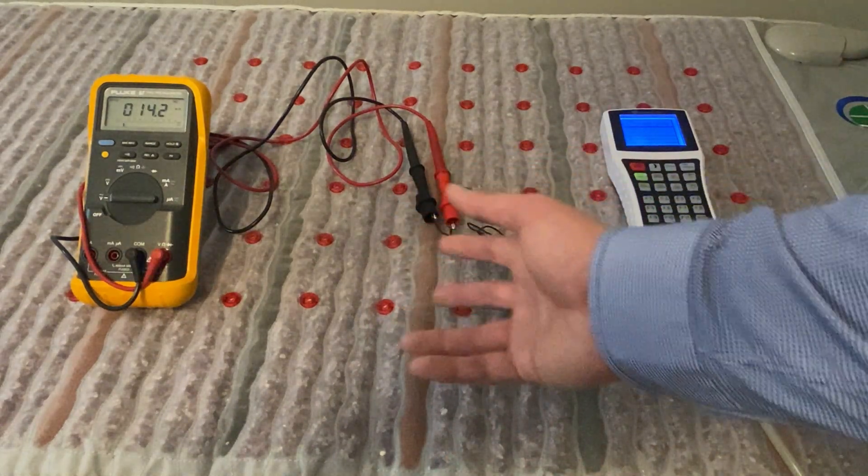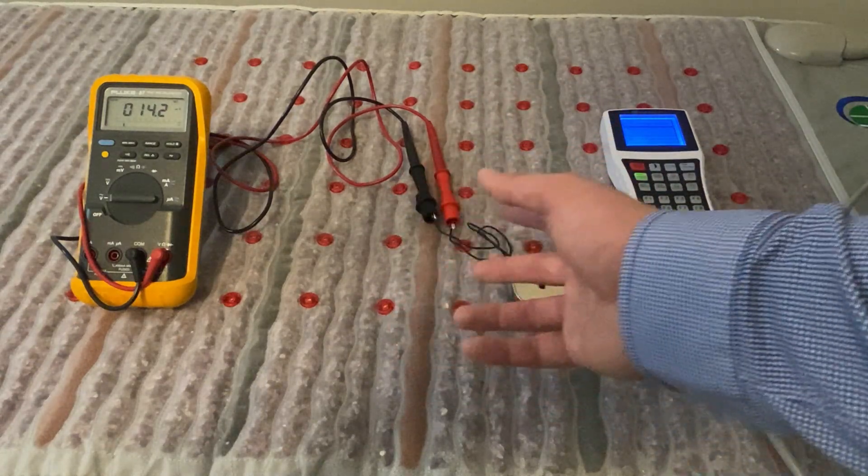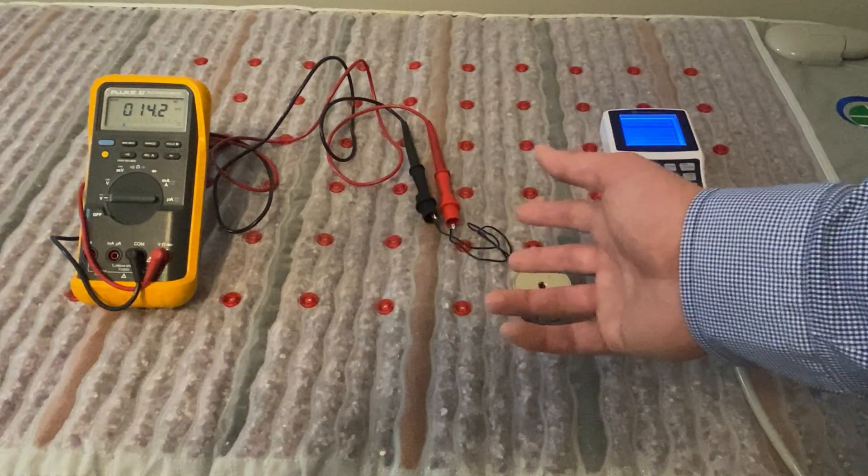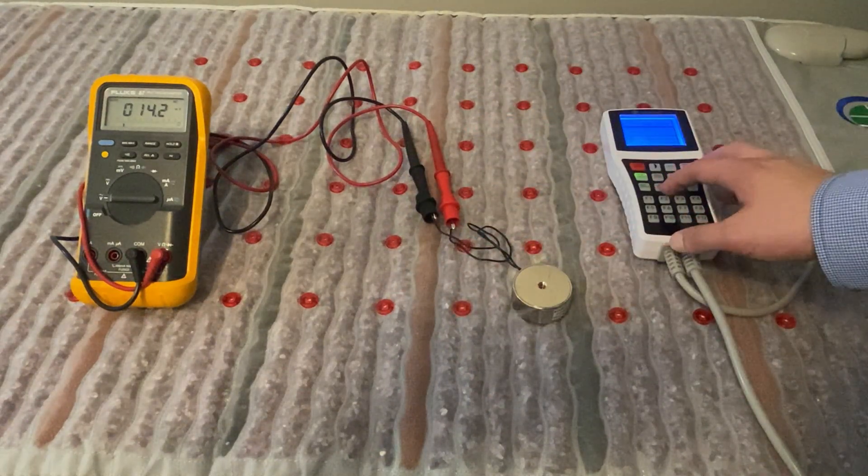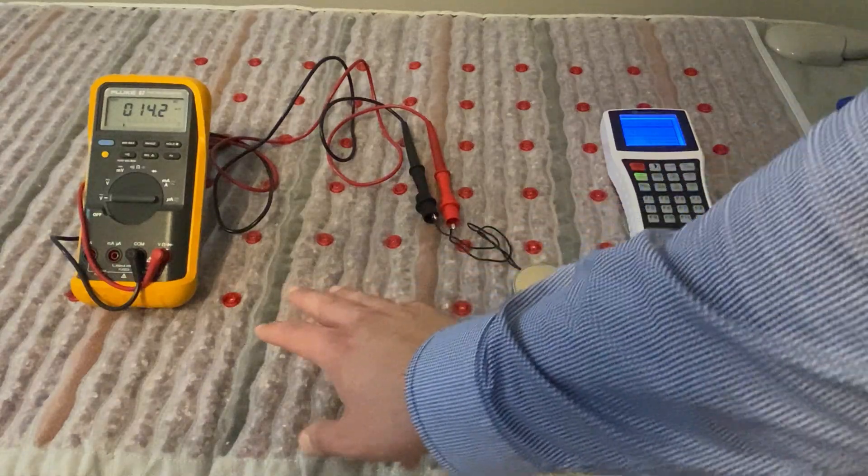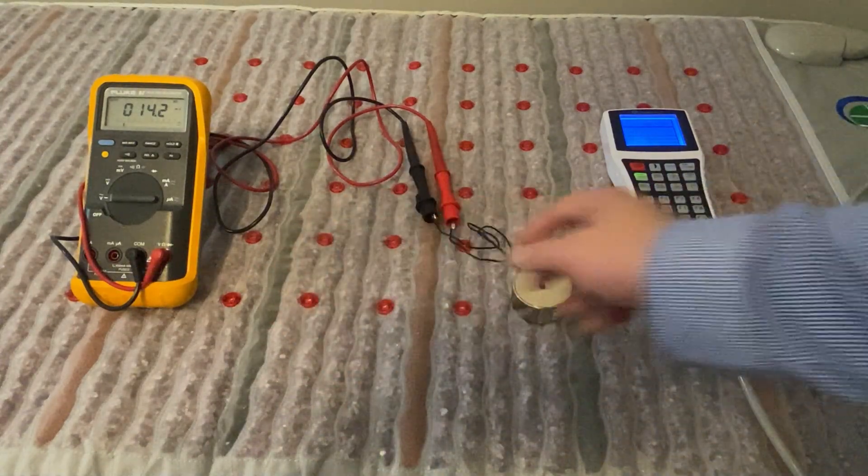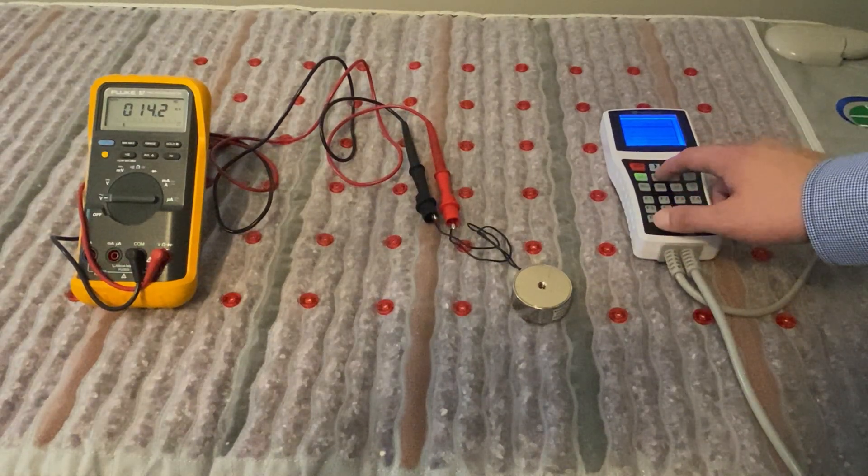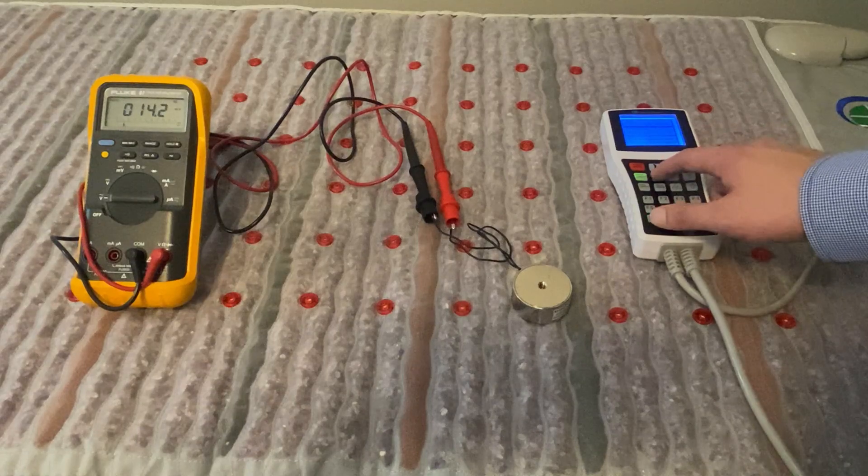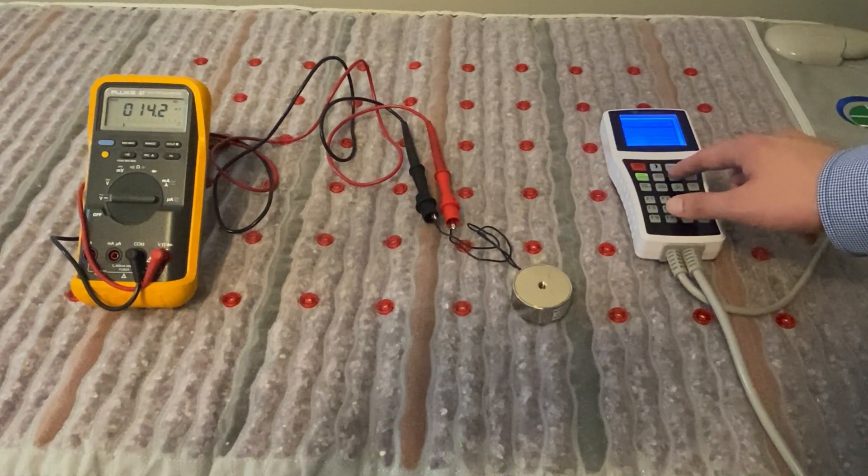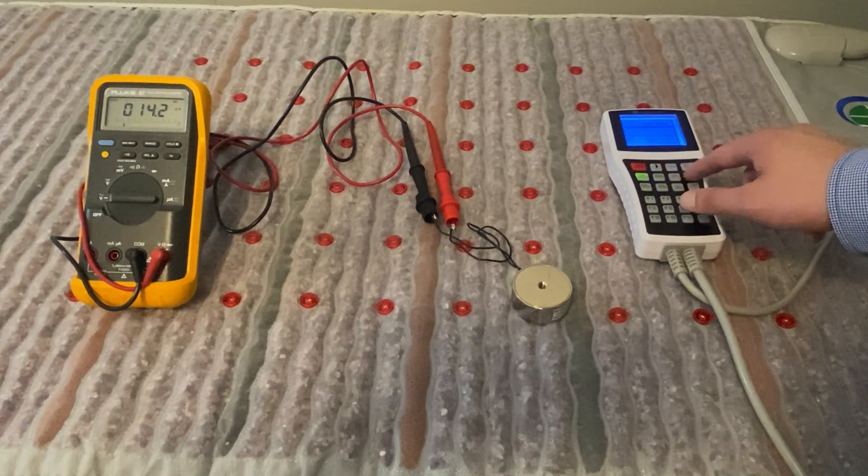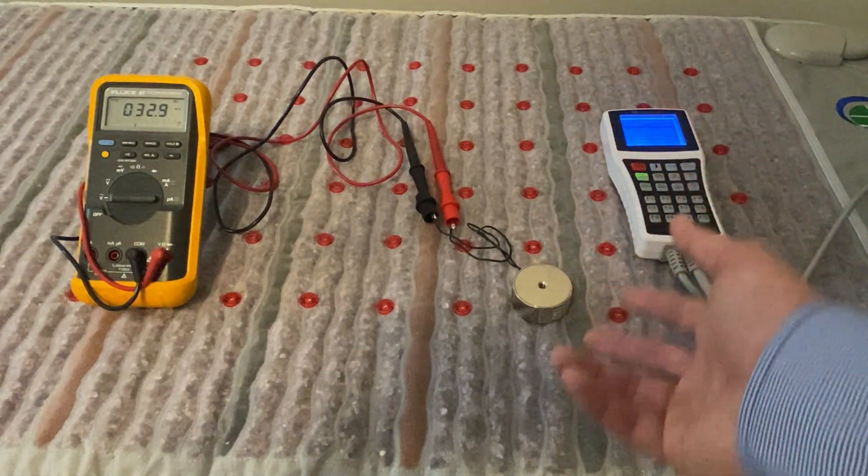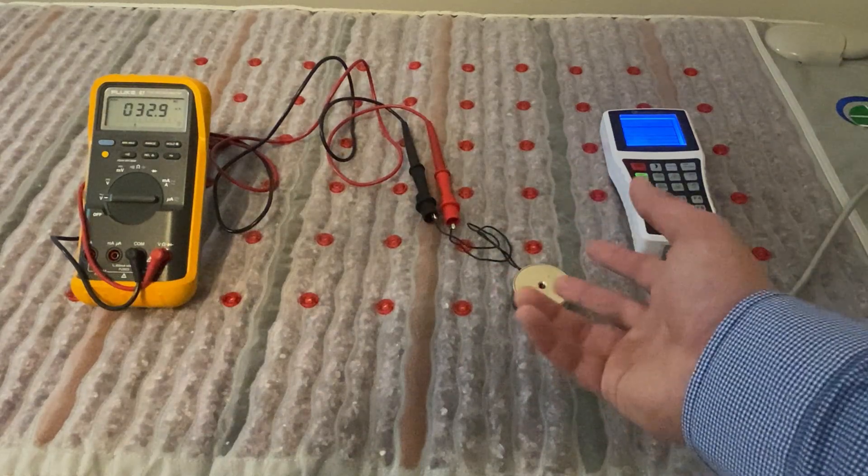So the neat thing about being able to change all these variables is we can really affect what the magnetic induction is at different intensities and frequencies by playing with all the combinations here. So if we want, for example, to be using a lower intensity like 50% here, but we want higher magnetic induction, we can do that by changing to a square wave, increasing up to 20 hertz, and going back to the medium pulse. We're still at 50%, and you can see we start getting more magnetic induction.